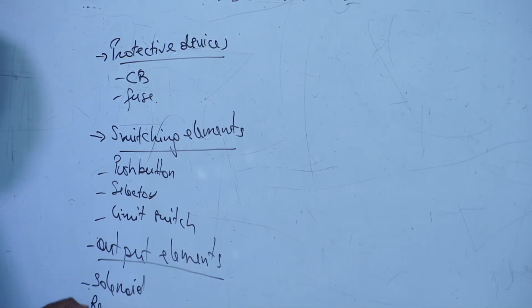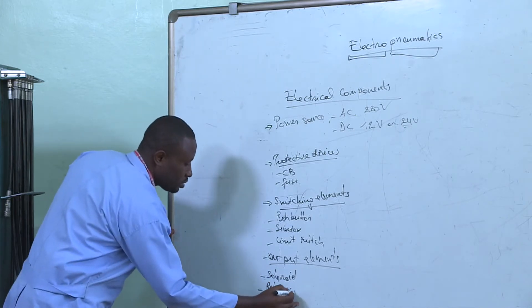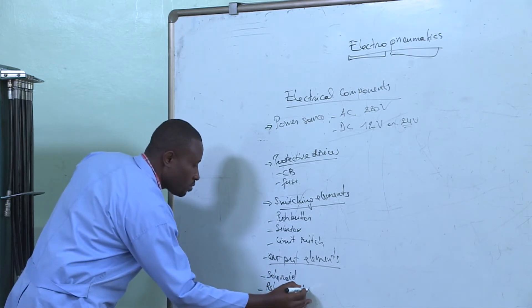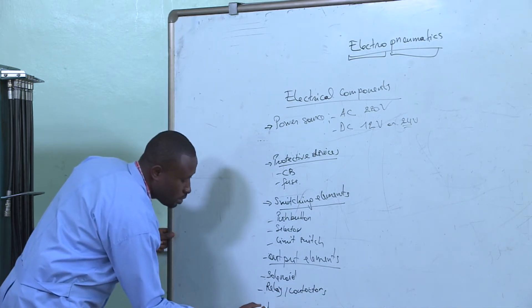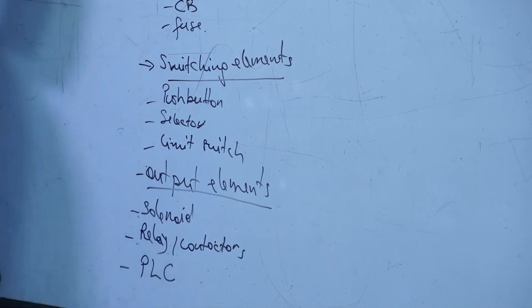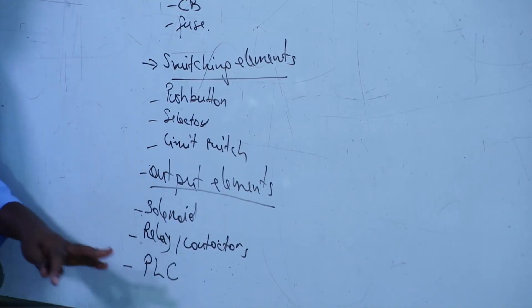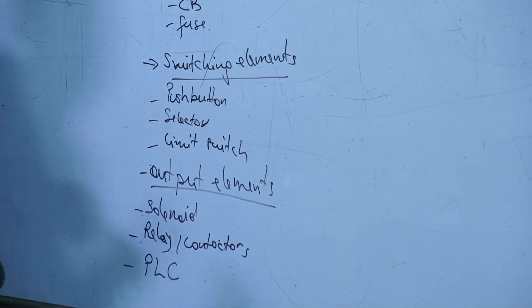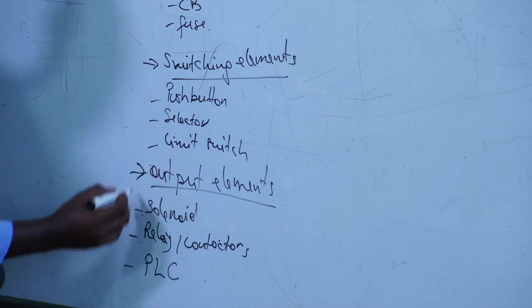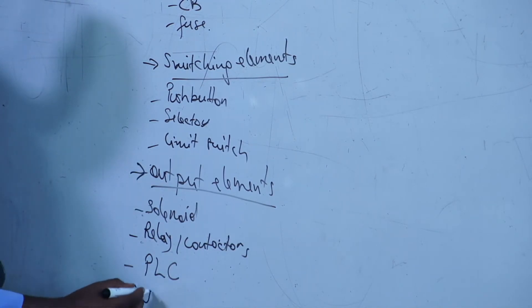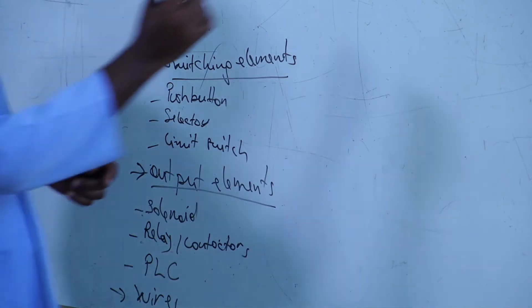We should also have a relay or contactors. We can also use a PLC — programmable logic controller — but this is the advanced option. Of course we will also need wires. And for the pneumatic side, we will need many of the parts we discussed.